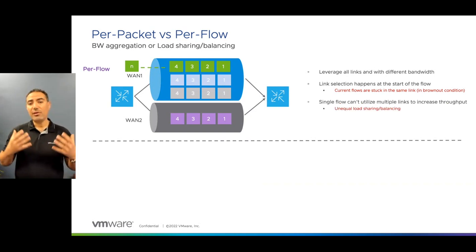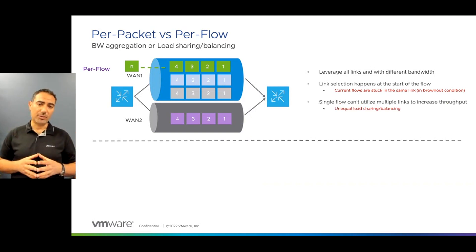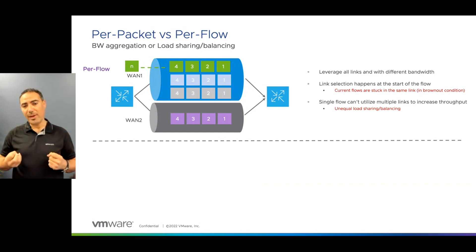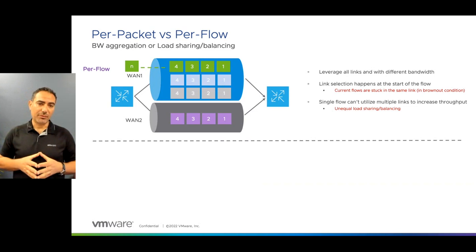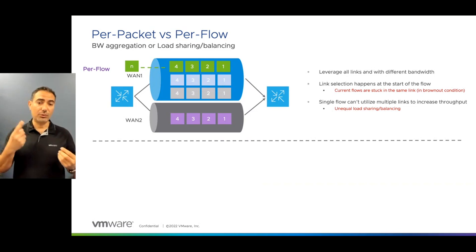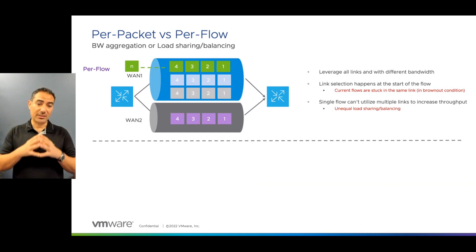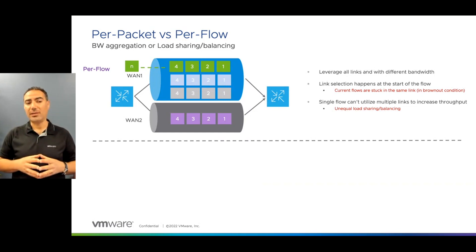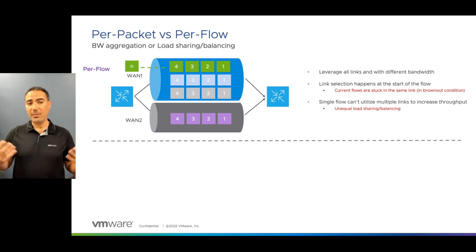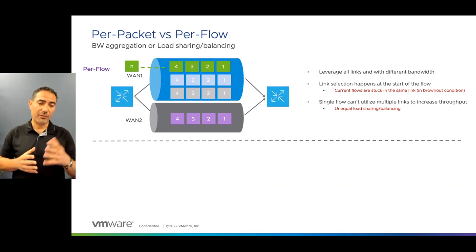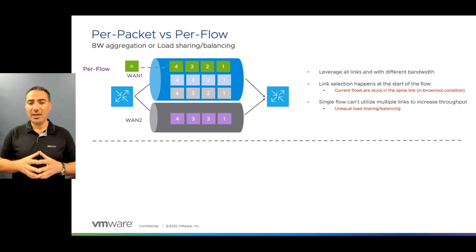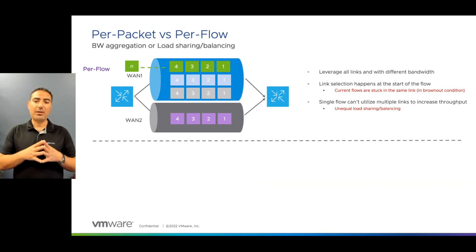The second problem is that a single flow can't utilize all of the transport circuits. I can do load sharing and load balancing, but I can't improve application performance, because application performance is always between a user and an application — and that is always one flow. I can achieve load sharing and load balancing, but not equal load sharing. For example, a flow on circuit number two might be very heavy and take 90 percent of the circuit, while the three other flows on circuit number one may only take 10 percent. So I can't guarantee 100 percent equal load sharing.